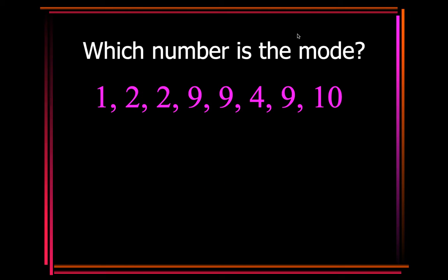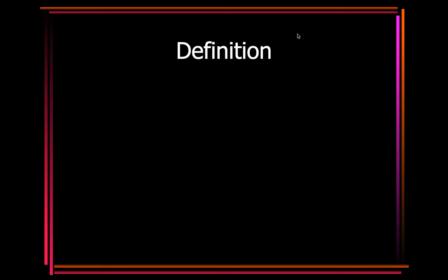This one, you need to change just a little bit. So it would be 1, 2, 2, 4, 9, 9, 9, 10. So you have 2 twos, but you have 3 nines. So therefore 9 is going to be the mode.